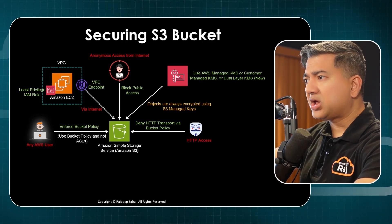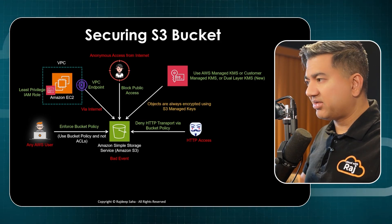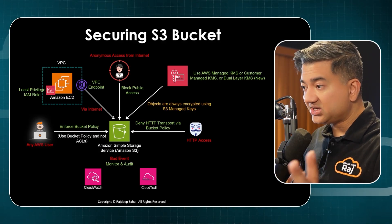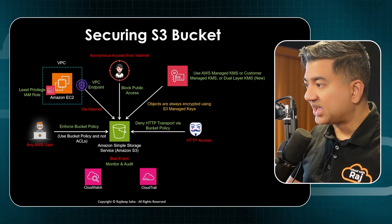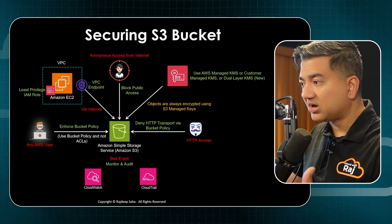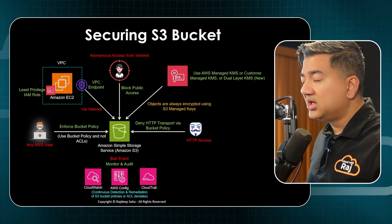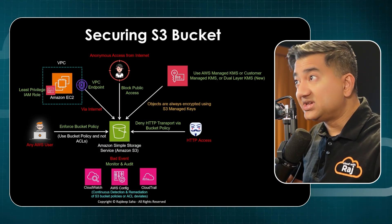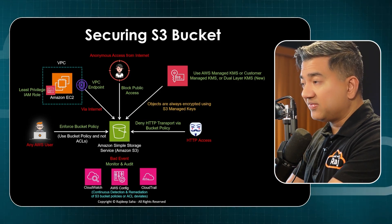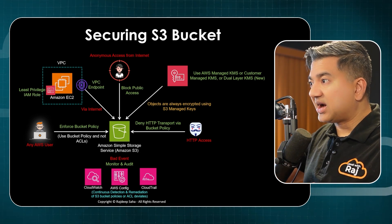We're getting a good picture of what S3 security looks like, but things happen — you might have a bad event or miss some security configurations. In that case you need to monitor and audit. Candidates always mention CloudWatch and CloudTrail for logging, but to delight the interviewer you should also mention AWS Config. AWS Config does continuous detection of S3 bucket policies or ACLs. If someone tries to change the bucket policy, it detects it and can also remediate — you can trigger a Lambda to notify people or fix the bucket policy automatically.